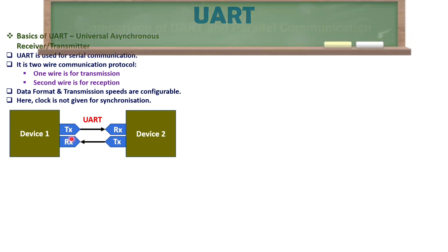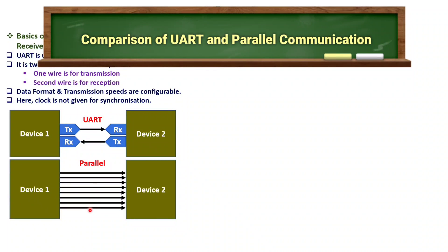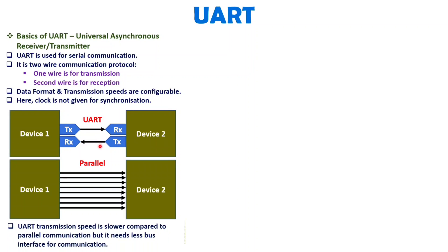Comparing UART serial communication with parallel communication, you can observe that in parallel you need many buses. In terms of bus complexity, UART is better, but parallel communication is better in terms of speed. So when you need high speed, select parallel communication. When you want a low-speed application, configure UART, which has less bus complexity.